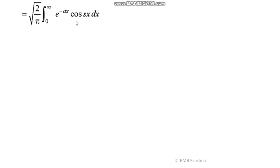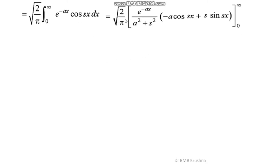To evaluate √(2/π) · ∫₀^∞ e^(-ax) cos(sx) dx, we use the standard reduction formula: ∫ e^(ax) cos(bx) dx = e^(ax)/(a²+b²) · [a·cos(bx) + b·sin(bx)]. Here a is replaced by −a and b is replaced by s, giving e^(-ax)/(a²+s²) · [−a·cos(sx) + s·sin(sx)], evaluated between 0 and ∞.